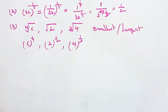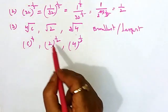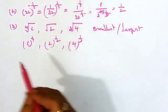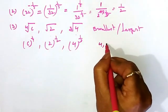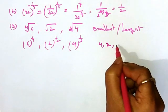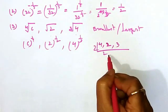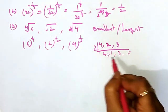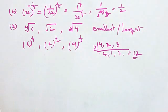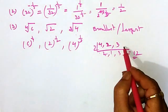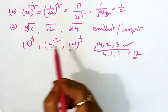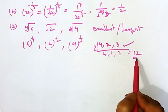The next step is to make all the powers equal. How do we do this? We take the LCM of all the denominators of the powers — that is, LCM of 4, 2, and 3. The LCM is 12. So we will make all the powers equal to 1 by 12.